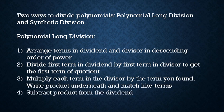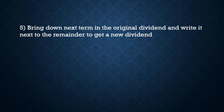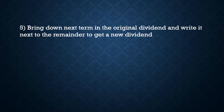Then you're going to subtract that product from your dividend. When you do this, the term with the highest power in your dividend is automatically going to be subtracted out to zero. If that highest-power term is still left over after you subtract, then you had a math problem somewhere, so go back and check. After subtracting, bring the next term in the original dividend down, if need be, and write it next to the remainder to get a new dividend.